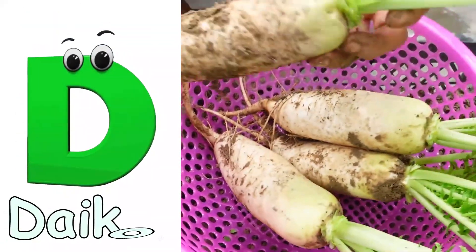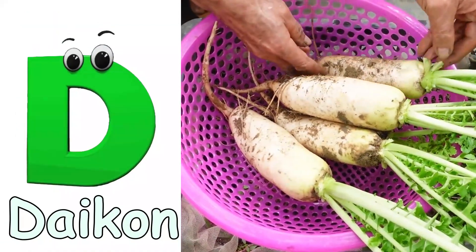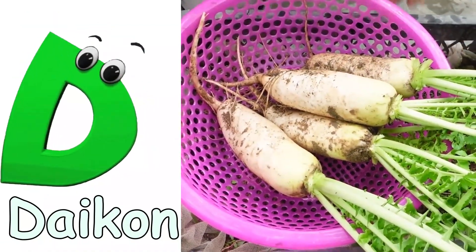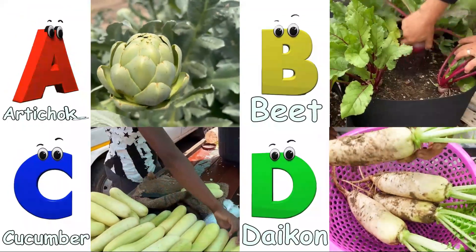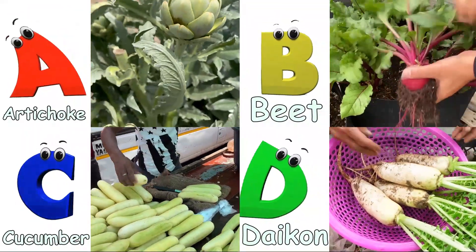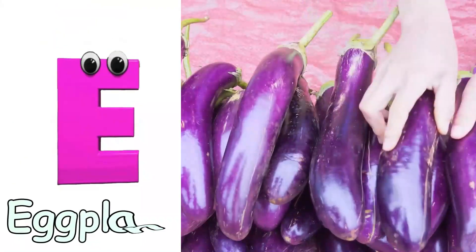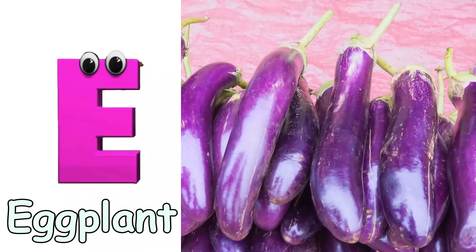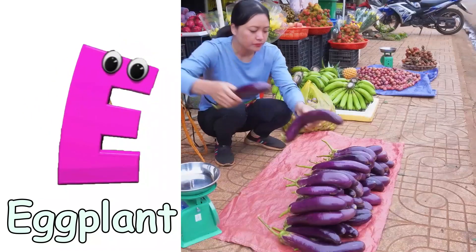D is for daikon. Daikon. E is for eggplant. Eggplant. F is for fennel. Fennel.